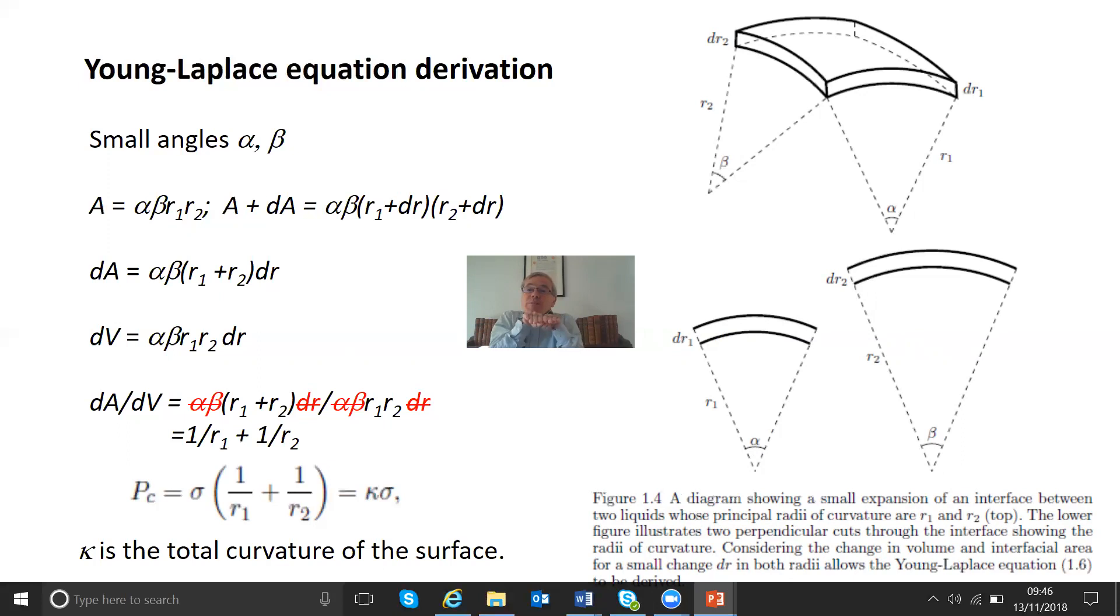We're now going to consider a displacement so that there's a small movement in that interface. And so the area plus the change in area is going to be αβ times R1 plus dR plus R2 plus dR. And these are just two small incremental changes in radius, and we'll consider those two to be equal. So the change in area is just αβ(R1 + R2)dR. The dR² term, we're going to ignore because this is a small change.